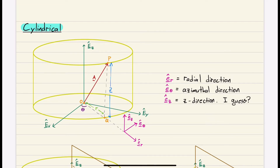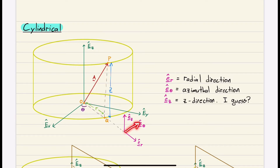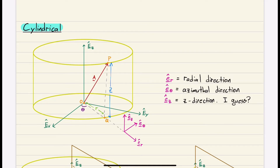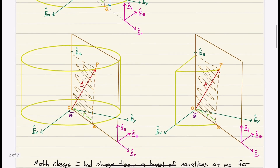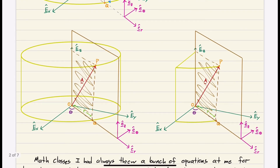Points O, P, Q form a plane. E-theta is perpendicular to this plane formed by OPQ, and E-Z points in that third dimension — telling you, once you go from O to Q, how high up you need to go, which is distance Z. I have a couple more drawings to help you visualize this cylindrical coordinate system.